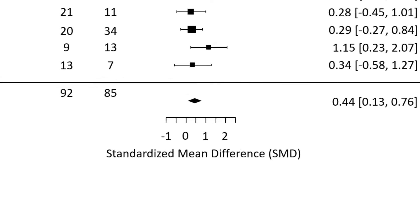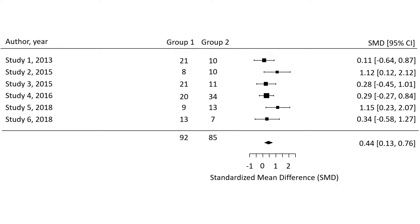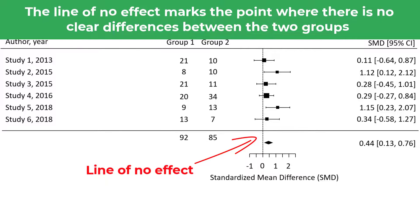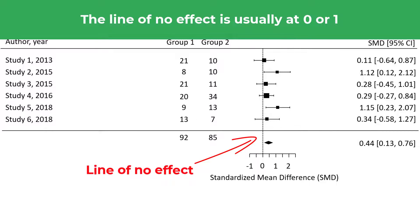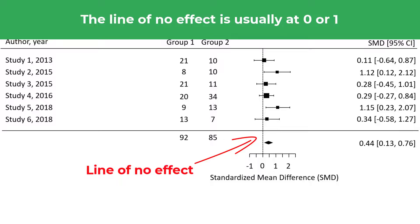Another feature you will often see in forest plots is the line of no effect. This is a vertical line, usually dotted, that passes through the position where there is no clear difference between the two experimental groups. For effect sizes based on differences, as is the case in this example, the line of no effect passes through 0. However, when the effect size is a ratio — such as an odds ratio or a hazard ratio — the line of no effect passes through 1.